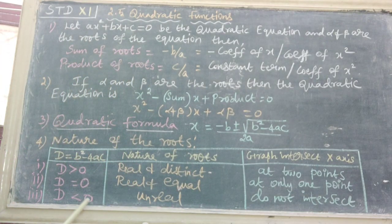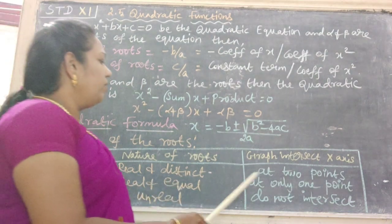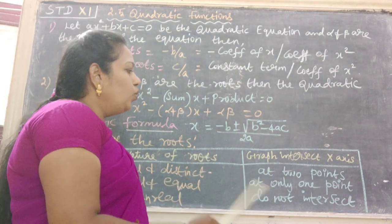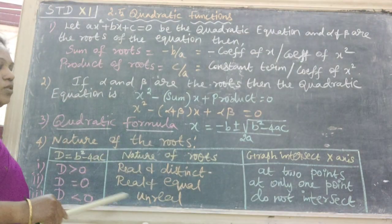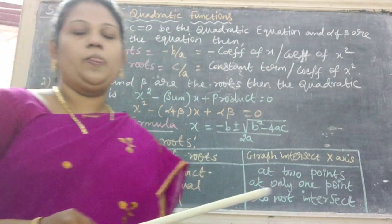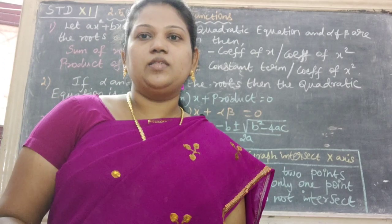Third one: D < 0, strictly less than 0. The nature is unreal. The graph does not intersect x-axis. Therefore, clearly, we studied this table already in 10th standard.